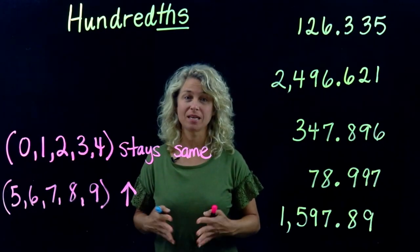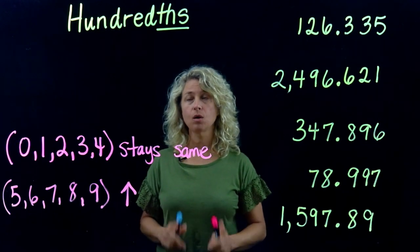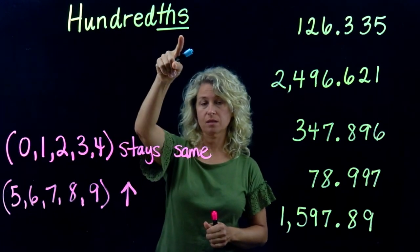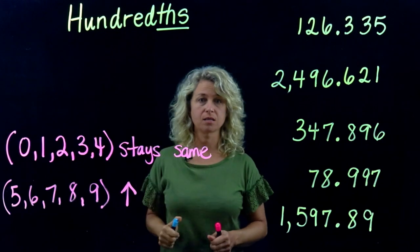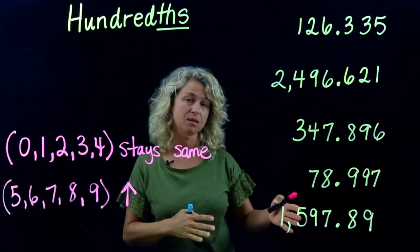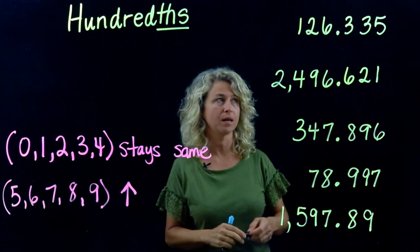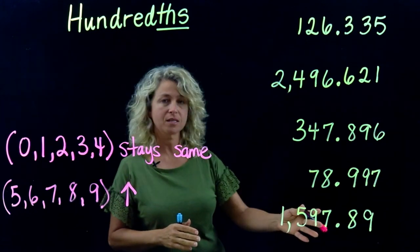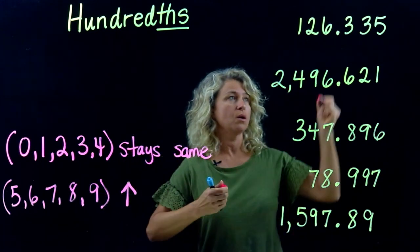Okay, we're ready for place value part three. We're going to round to the hundredths place, so let's go ahead and circle all those digits so we'll be ready. Here's five examples that we'll do together.